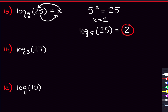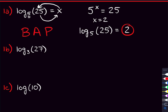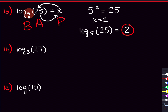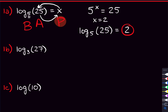So log base 5 of 25 is equal to 2. Another way to think about this is the acronym BAP — base, answer, power. The B corresponds to the 5 (the base of the exponent), the A corresponds to the 25 (the answer, on the right side), and the P corresponds to x (the power). That's an easier way for some people, but I personally like the circular motion method best.